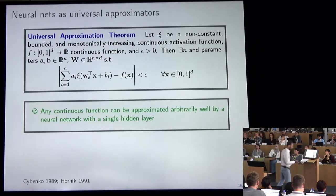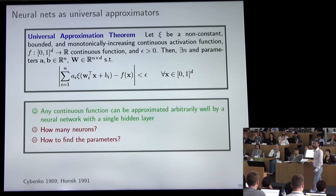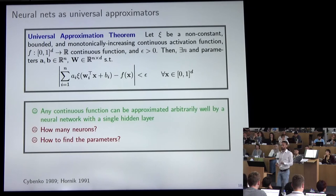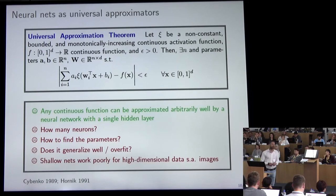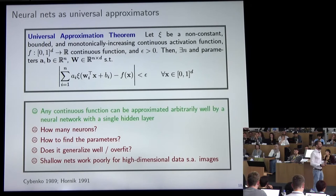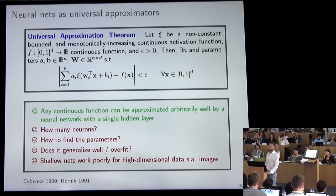On the negative side, this result doesn't tell you how many neurons you will need, how to find the parameters such that the network learns the given function, or whether it generalizes well or overfits. If you try to apply these shallow neural networks to high-dimensional data, it doesn't work — and the reason is what is usually called the curse of dimensionality.